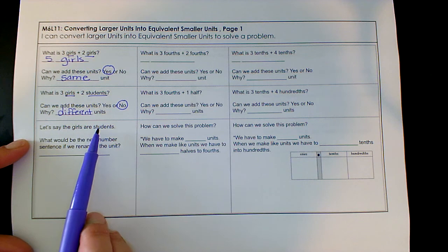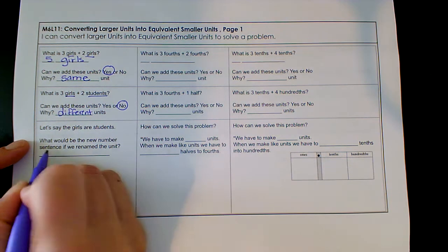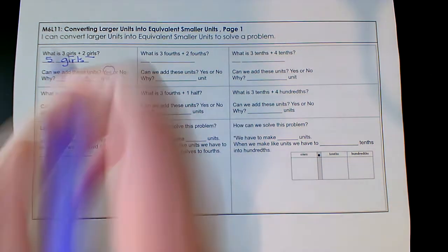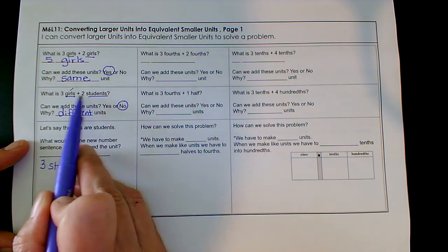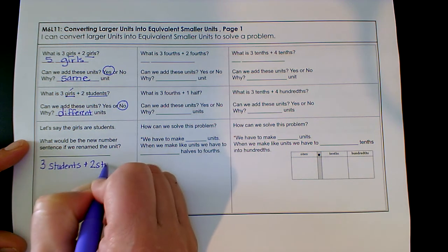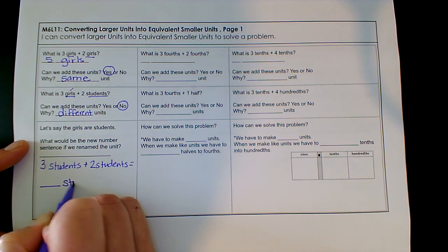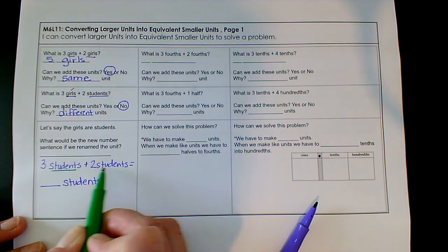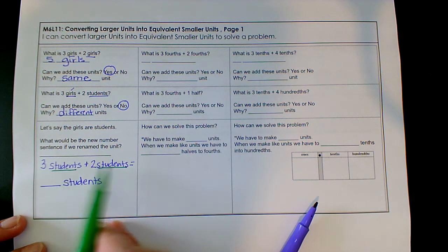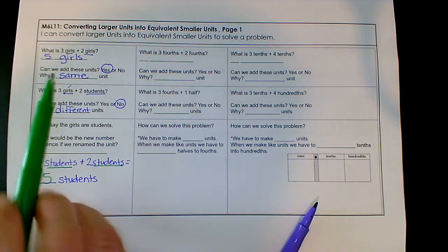But let's do this. Let's say the girls are students. What would be the new number sentence if we renamed the unit? We're going to say that the girls are students. So I'm going to change this one to students: three students plus two students equals blank. The unit is students. Now can I add them together? I sure can, because they both have the same unit, which is students. So three students plus two students is five students.